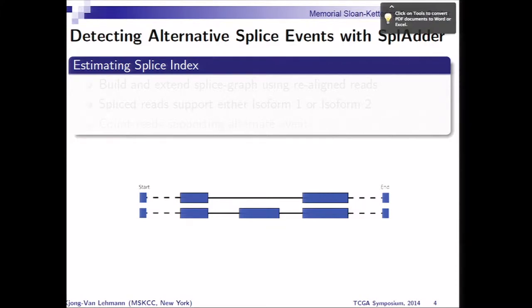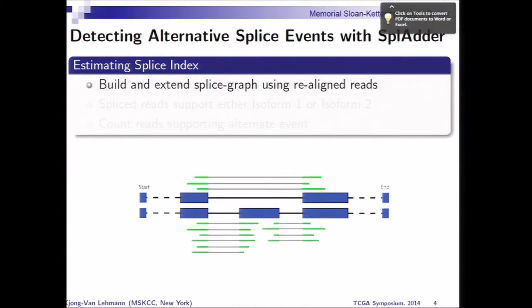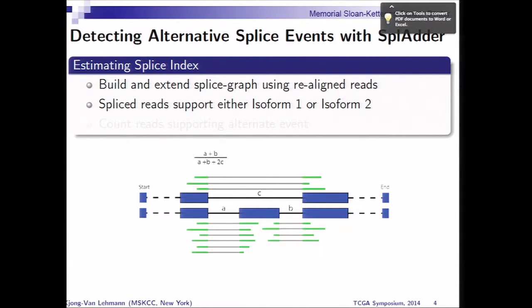Let me walk you through our approach of finding new splicing events. We basically start off with building a splice graph from the known splice annotations, and then, using the RNA-seq data, we try to find new splice junctions if there is support for new events. We will then count the amount of reads supporting — and this is an example of an exon skip — the reads supporting this alternative exon, and then normalize it across the reads covering the whole region. This gives us something we call a splicing index, or the percent spliced in.